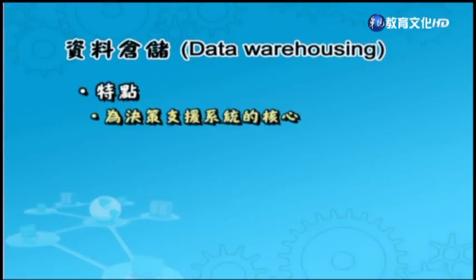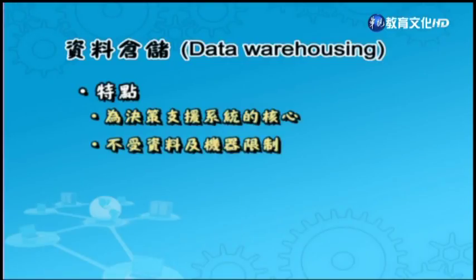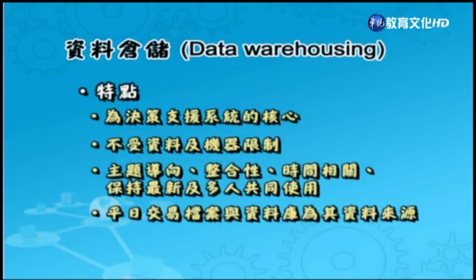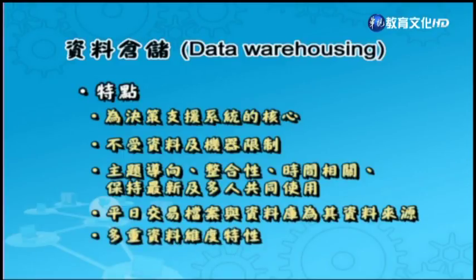资料仓储提供完整的资料分析与决策资源功能，并资源企业经营规划、分析设计作业，以拟定正确的行动方案。此外，它还可以整合组织各部门资料，减少作业的成本。资料仓储的特点包含：第一，决策资源系统的核心；第二，不受资料及机器的限制；第三，主题导向整合性时间相关、保持最新及多人共同使用；第四，平日交易档案与资料库为期资料来源；最后，多重资料维度特性。